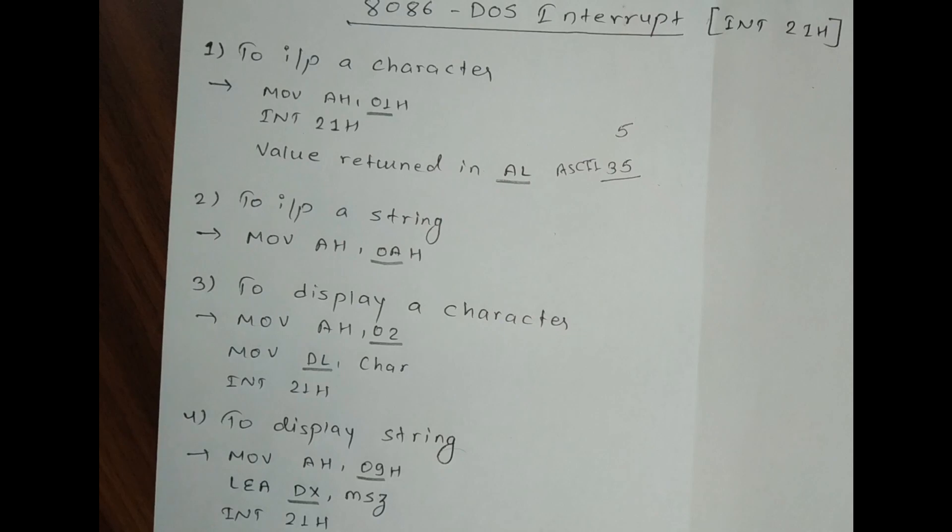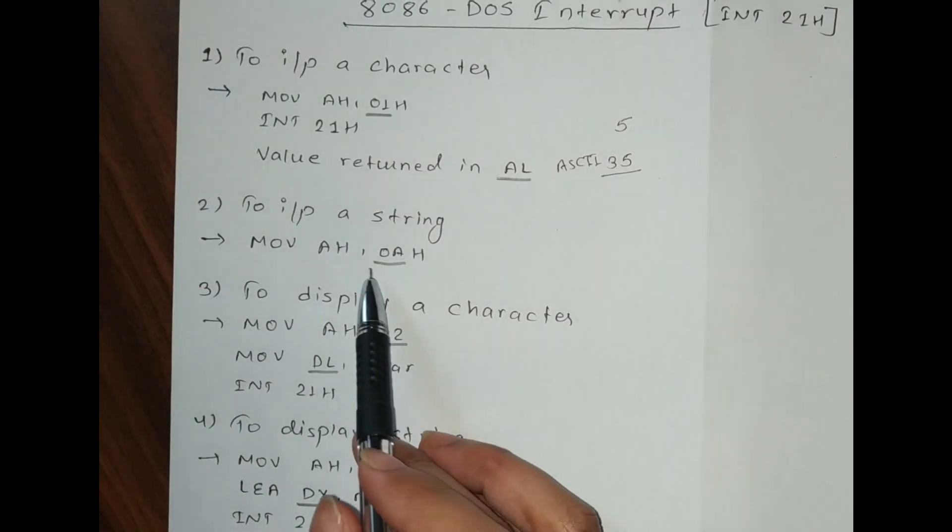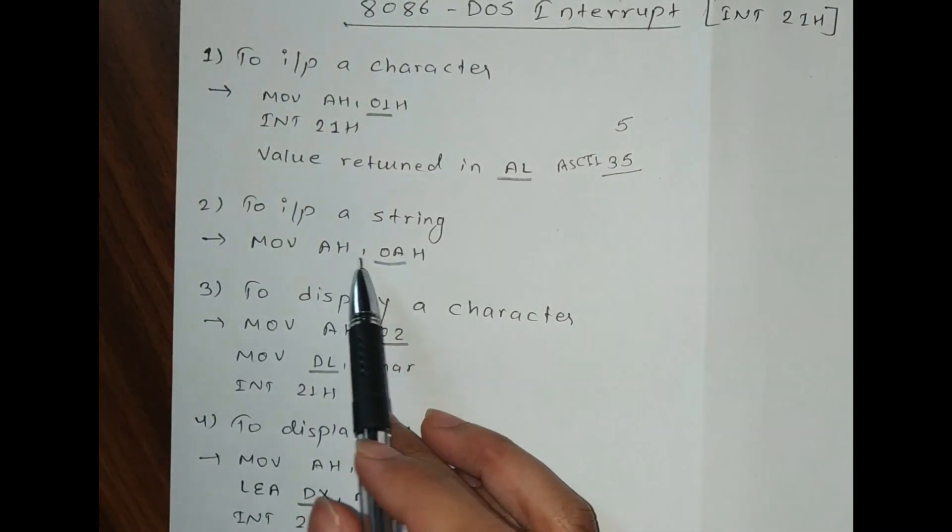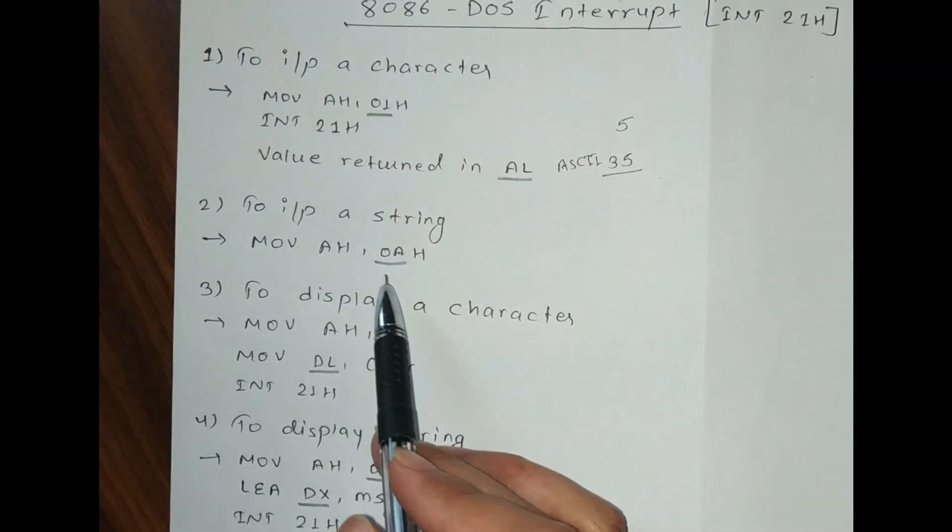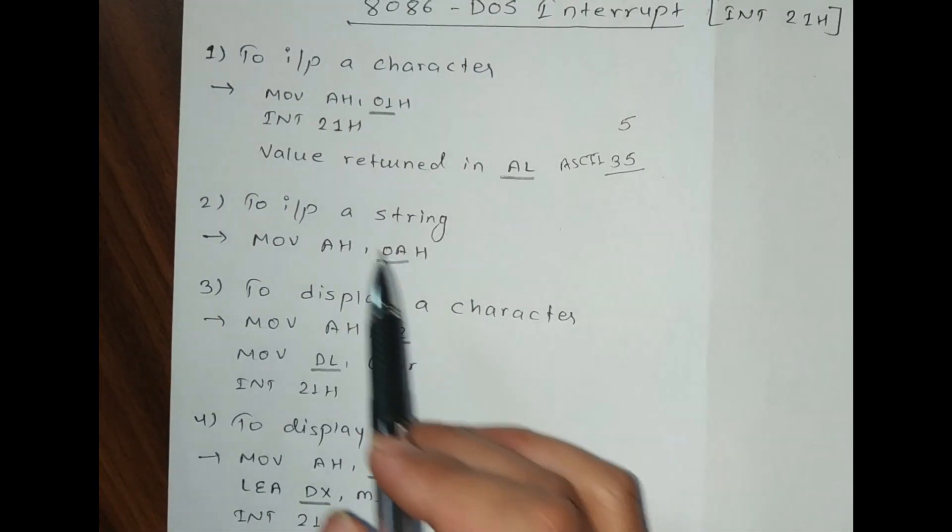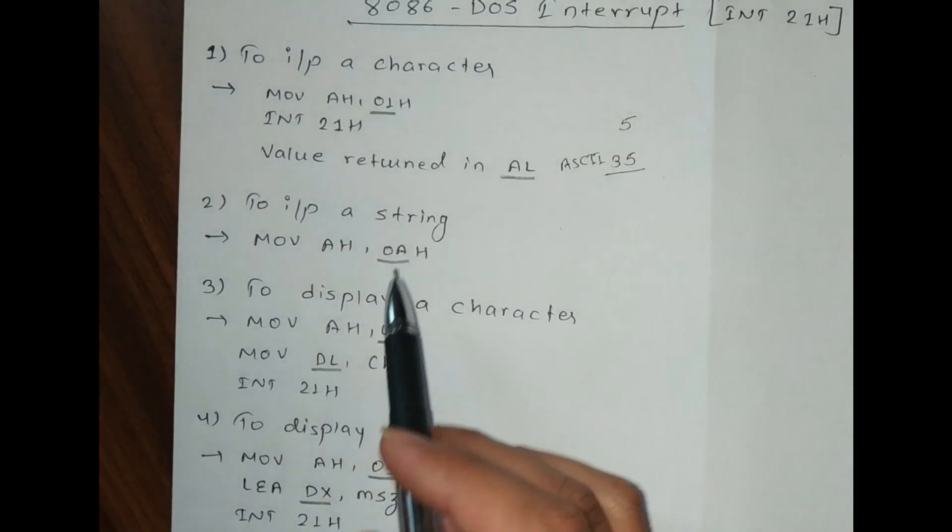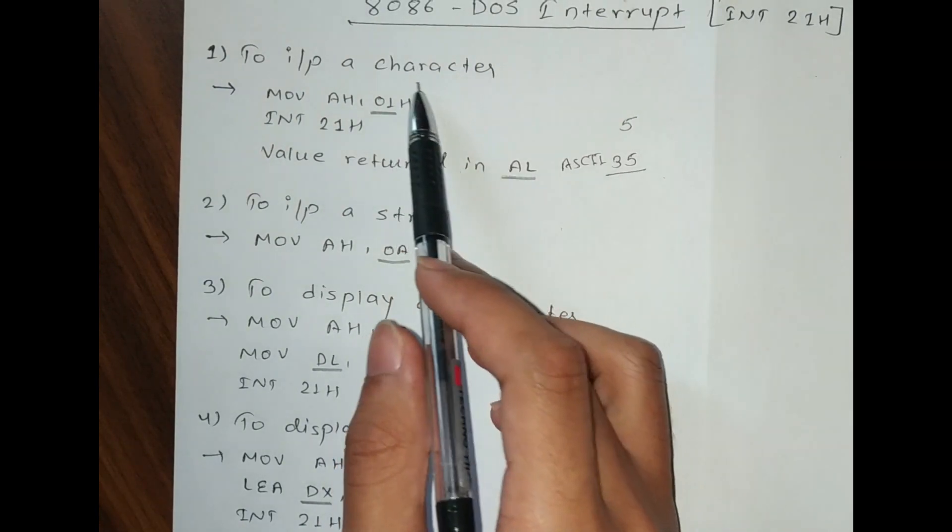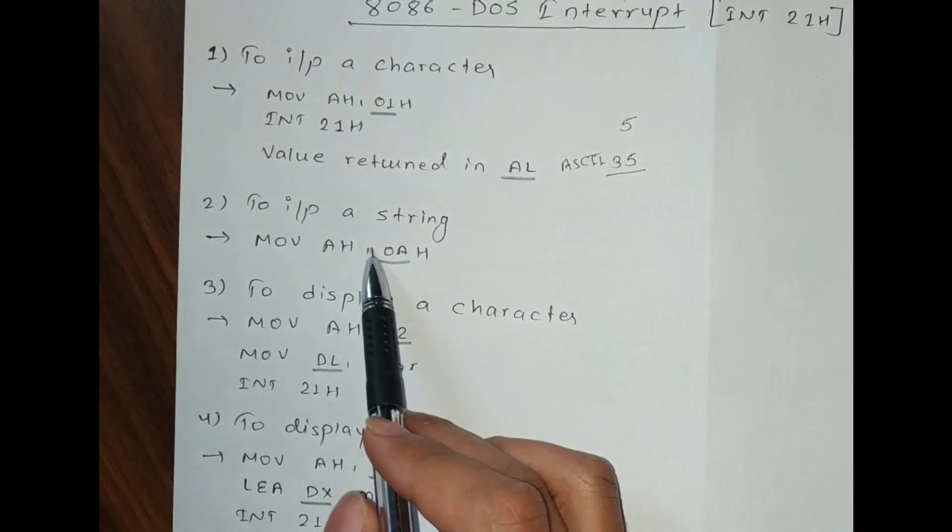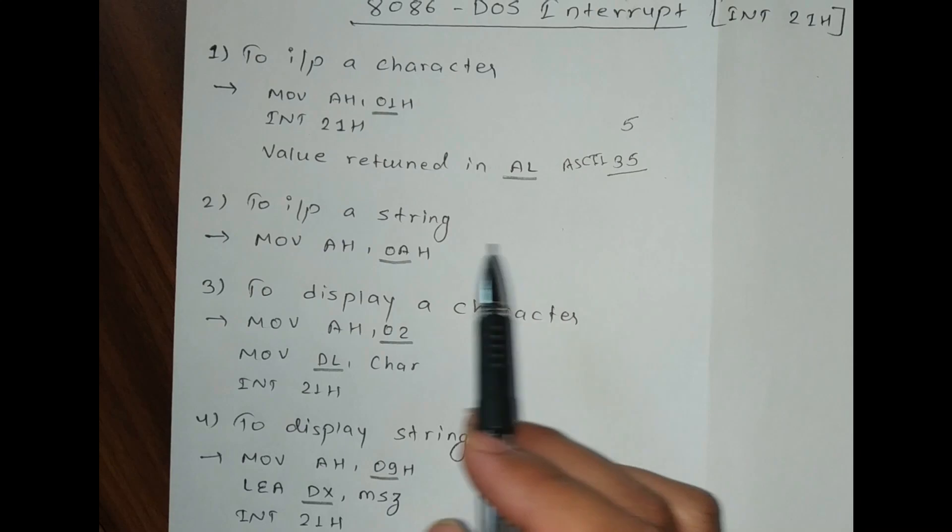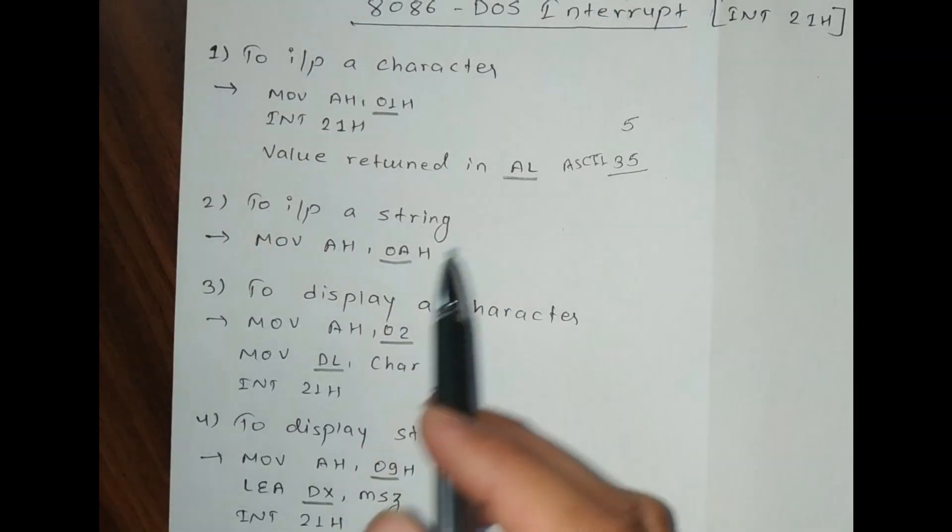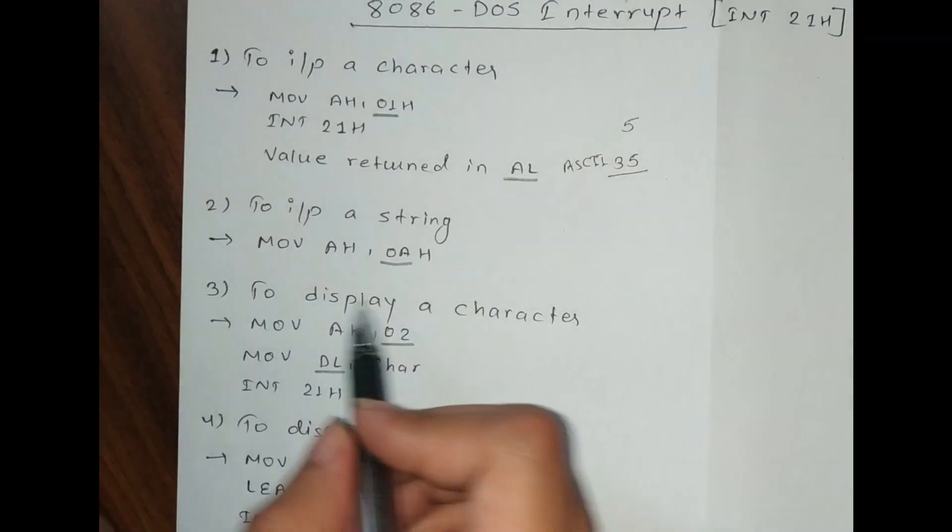By keeping the value 0AH in the AH register, you can perform input string. In the previous case, you can input a single character, but in this case you can input a string which can be a combination of a lot of characters. Here we have to write some more code. I will teach that in my next video.